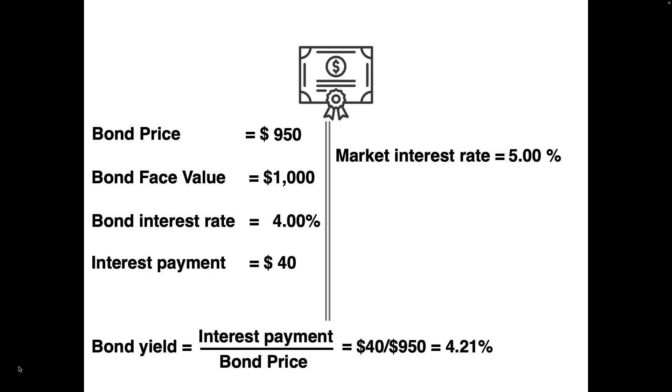So how much should you have paid? Suppose instead of $950, you paid $900. What yield would the bond give you? You would divide the $40 payment by $900 to get a yield of 4.44%, which is still less than the market interest rate. Clearly, the highest price you should pay for this bond is one that generates a yield equal to the market interest rate.